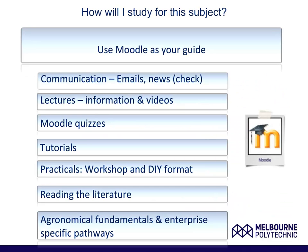So how will you study for this subject? Your first protocol, as for all subjects, is the use of the website Moodle, run by Melbourne Polytechnic. Please go into Melbourne Polytechnic and click on the Moodle sign — there is an image on the slide, a big M with a hat on it. Once you click here, you can use your student identification and assigned password to enter Moodle. In Moodle, we will cover communications such as email and news, and it is your responsibility to check these regularly as it will be the main form of communication for this subject.